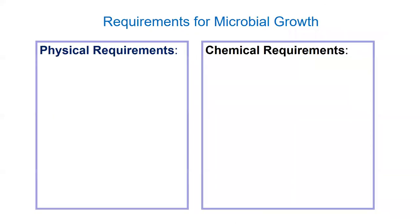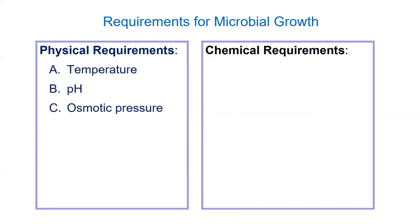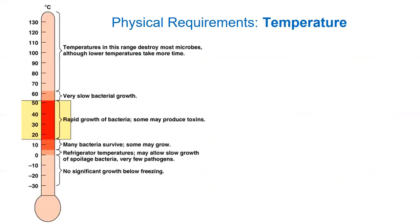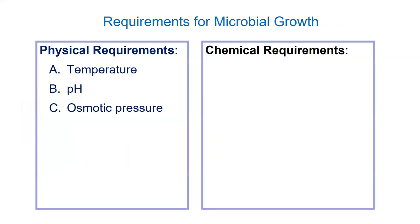Some organisms are very slow — tuberculosis is famously slow. If someone has tuberculosis you're not depending on a culture because instead of 24 hours you might be looking at 24 days. We want to treat people faster than that. There are different growth times depending on the organism, but most medically relevant ones grow relatively quickly.